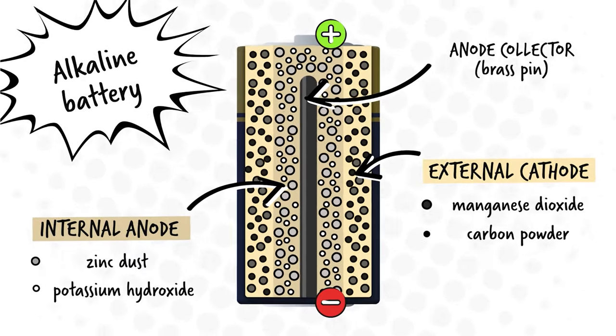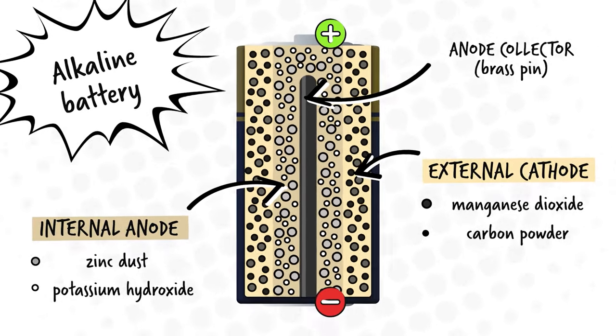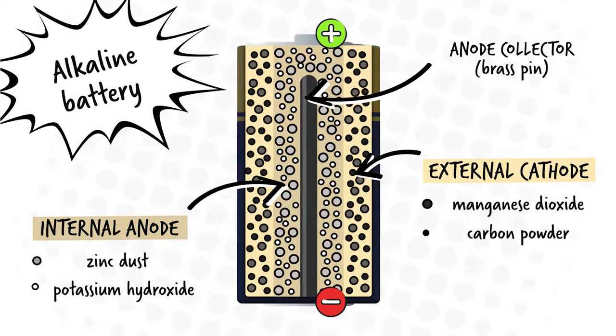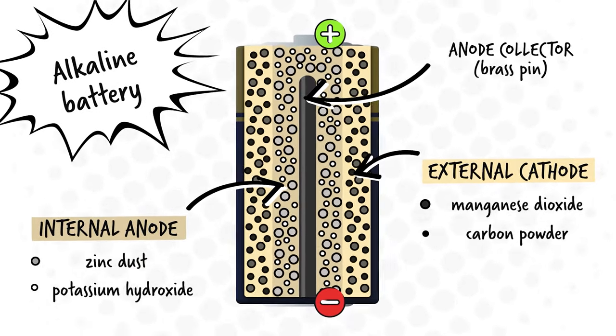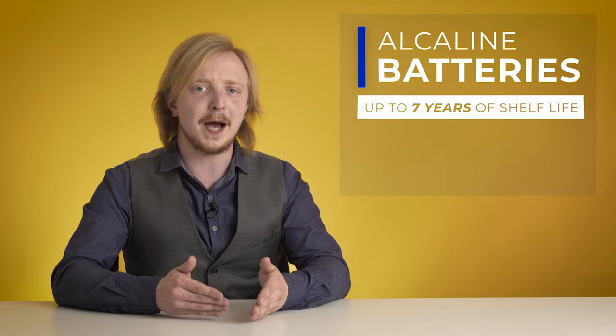One is mixture of manganese dioxide and carbon powder and acts as cathode, while the anode is made of zinc dust mixed with potassium hydroxide. This combination increases its lifespan up to seven years. Additionally, alkaline batteries can withstand more extreme temperatures from minus 30 to plus 70 degrees celsius and have higher energy density.